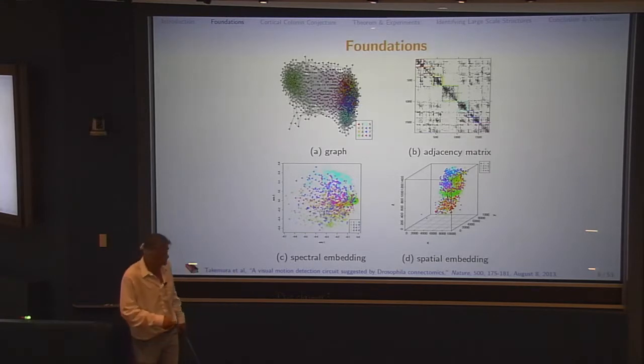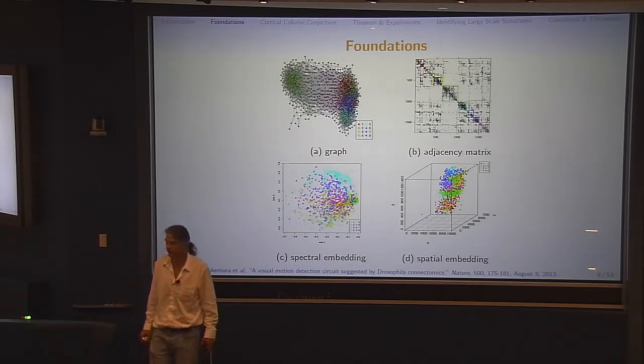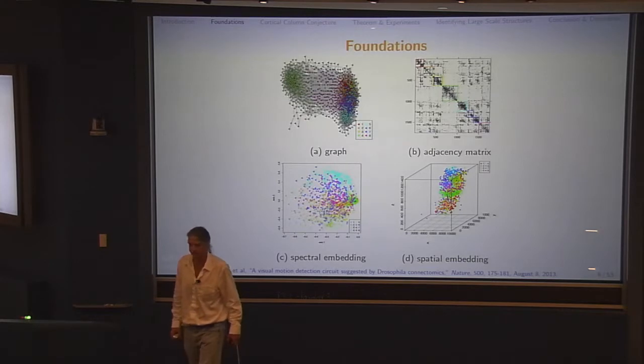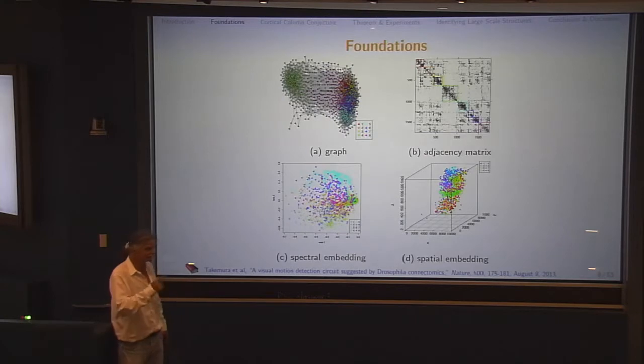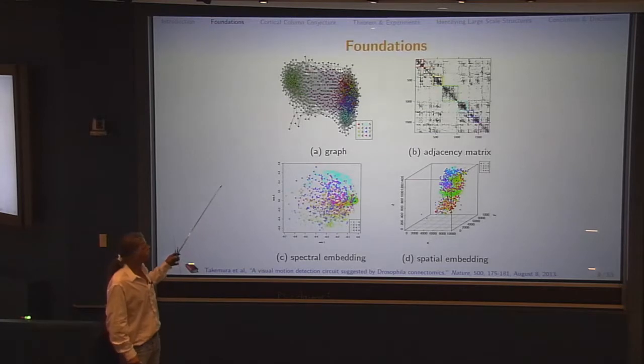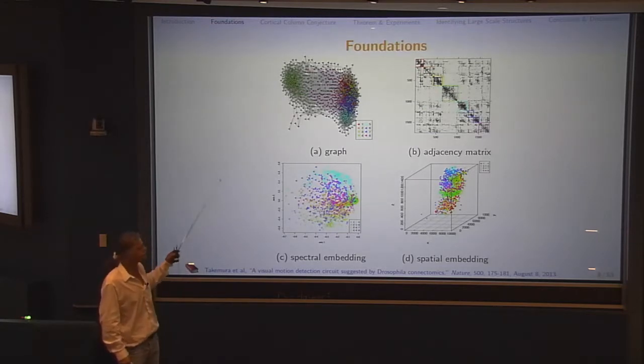So the idea of graph inference is to do adjacency spectral embedding and then do classical statistical inference. And then the question is, what does that inference mean when you go back to the original graph? So this is a particular data set. It contains 2,000 neurons. We call this Mietje's fly data at Hopkins because it's out of Mietje Chklovsky at Janelia. And I'm just using it now to illustrate adjacency spectral embedding. So I have a graph.